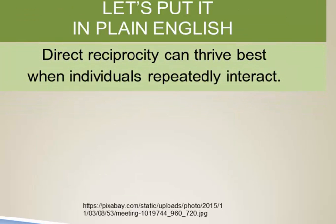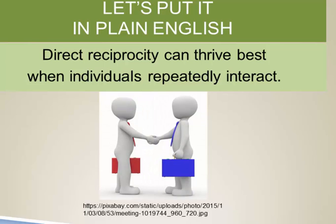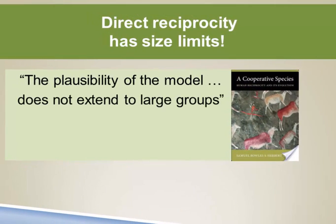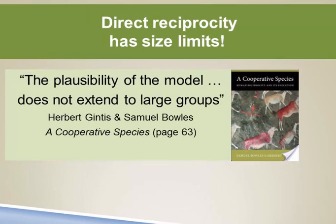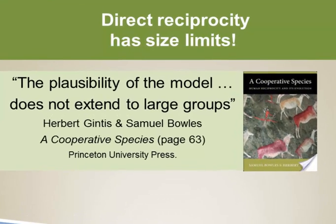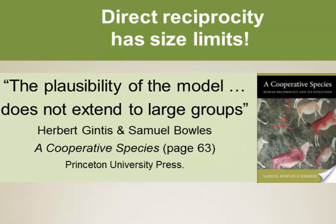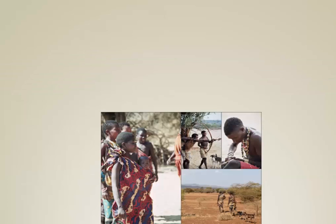So let's put that in plain English without the math. Basically what we're suggesting is that direct reciprocity thrives best when individuals repeatedly interact and have a high likelihood of repeatedly interacting. So now we need to think about how this possibility of repeatedly interacting is related to the size of a human society. And unsurprisingly, it's been suggested that direct reciprocity doesn't apply to large human groups. This argument has been made, for example, by Herbert Gintis and Samuel Bowls in their book A Cooperative Species by Princeton University Press, page 63. So evidently direct reciprocity has size limits.